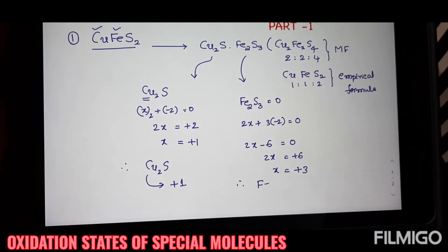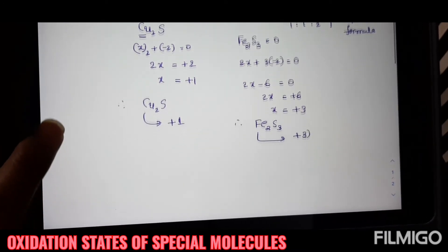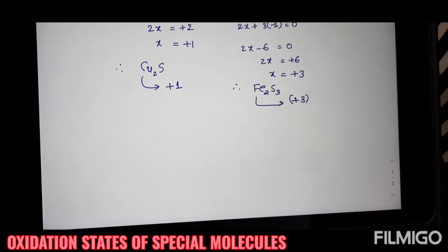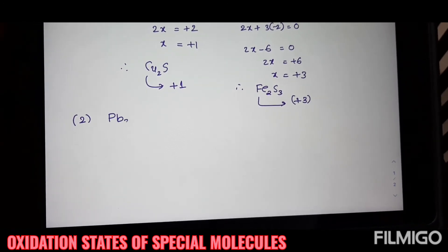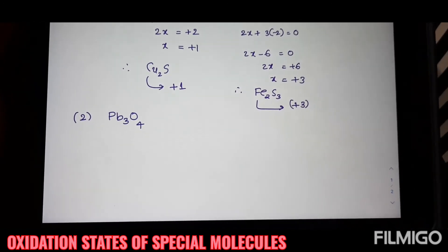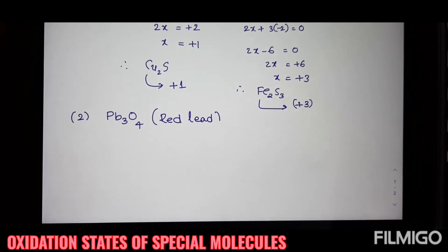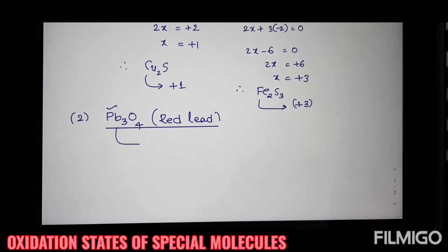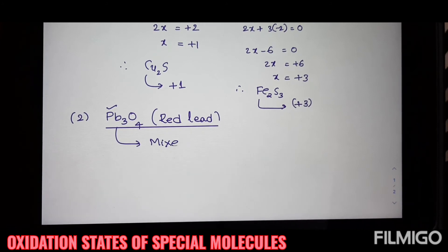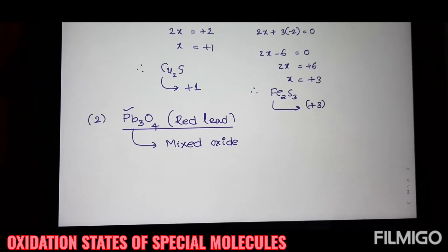This is the way to calculate oxidation states of CuFeS2. Take the second molecule. Pb3O4. How can you calculate oxidation state of lead in the Pb3O4? Pb3O4 is a mixed oxide. That is the data required.